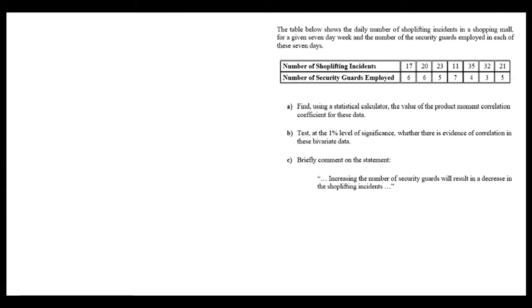The first thing we're asked to do is find the PMCC. We can do this on our calculators - the PMCC is the R value from your regression summary screen. From there we get negative 0.9316, which is very strong negative correlation.